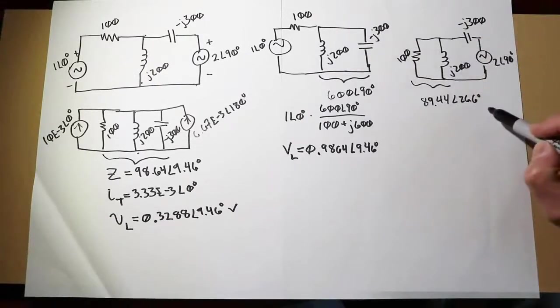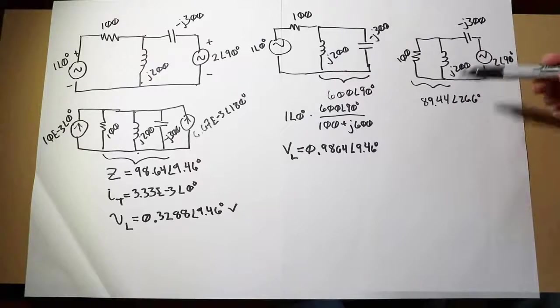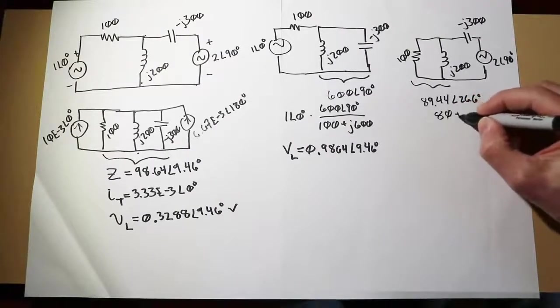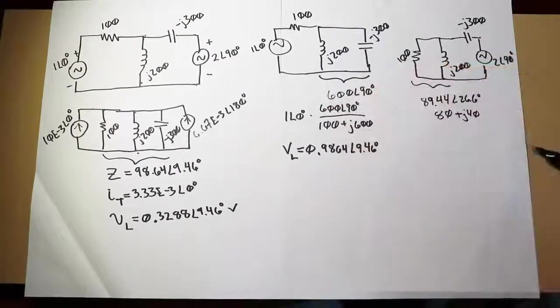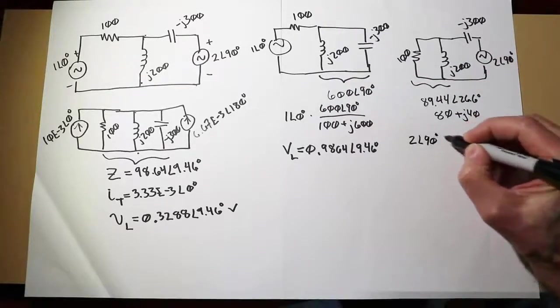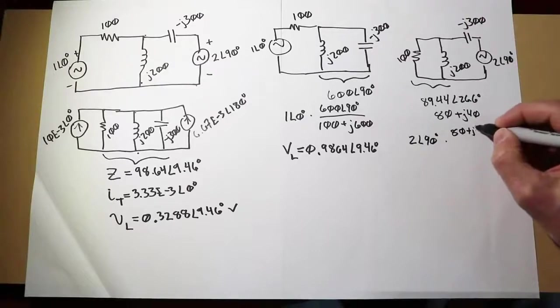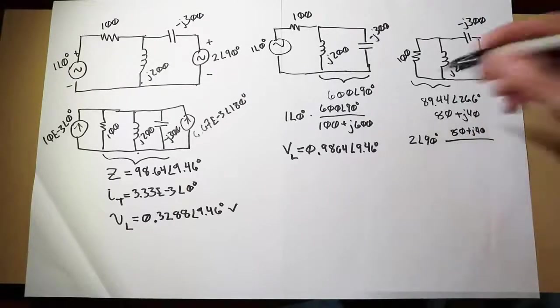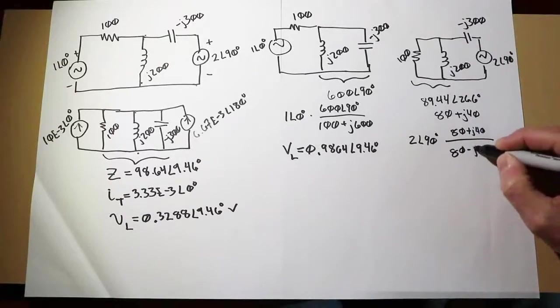It's inductive, so we see a positive angle here. The 100 ohm resistor is going to dominate, so it's not going to be a large angle, less than 45 degrees. This equals 80 plus J40 in rectangular form, which is handy for the voltage divider. The voltage divider would be 2 at an angle of 90 times 80 plus J40, divided by that plus the minus J300, so that's 80 minus J260.